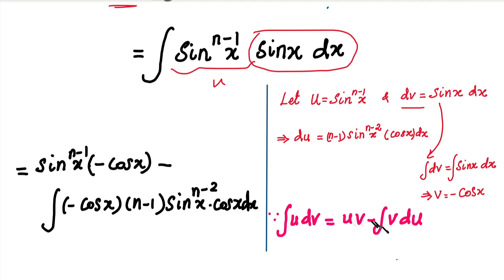We use the integration by parts formula. So in this integration formula, we have u and v. Here, u is a direct value, and dv is the second function. So we will integrate using the integration by parts formula.